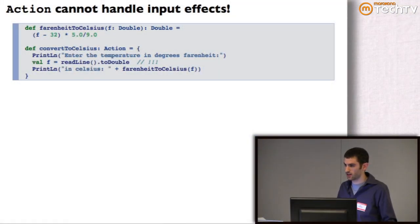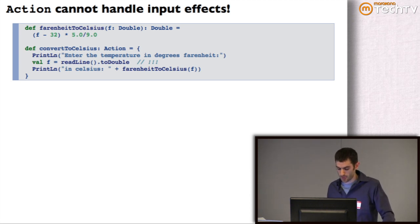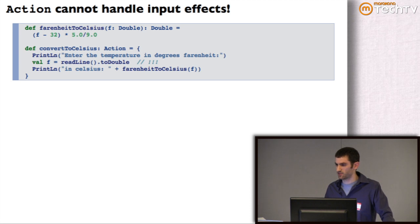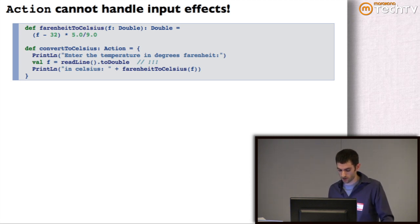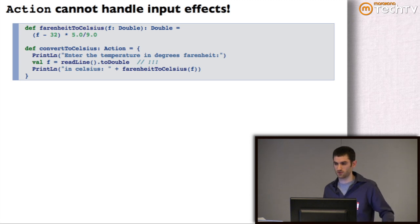Another restriction with Action is that we can't handle what I'd call input side effects. Here's a program I'd like to write: prompt the user to enter a temperature in Fahrenheit, convert it to Celsius, and print the result. I have printLine returning an action, but there's no way to encode an action that is a side effect returning a result. So I can't chain an input side effect — something that returns a value — to further parts of the imperative program I'm assembling. I'm forced to actually call readLine and do the side effect directly, making this no longer a pure function.